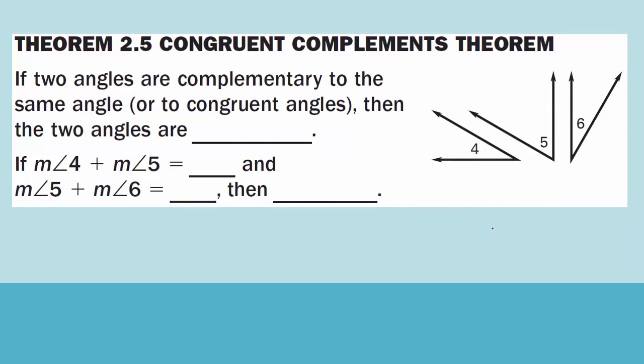Theorem 2.5: Congruent Complements Theorem. If two angles are complementary to the same angle or to congruent angles, then the two angles are congruent. Complementary means the two angles add up to 90 degrees. If the measure of angle 4 plus angle 5 equals 90 degrees, and the measure of angle 5 plus angle 6 equals 90 degrees, we get rid of angle 5 and say angle 4 is congruent to angle 6.